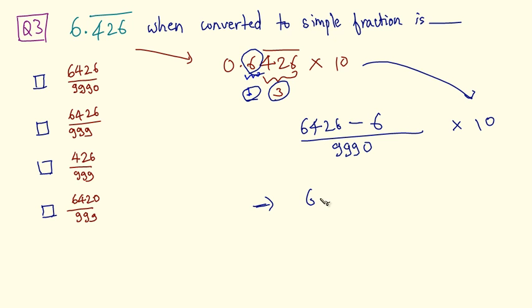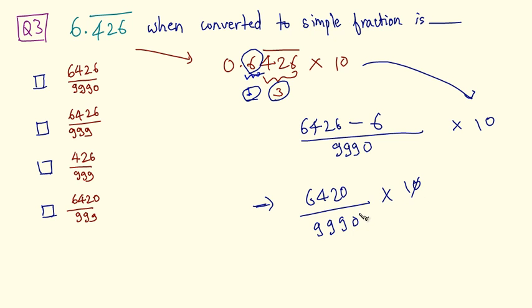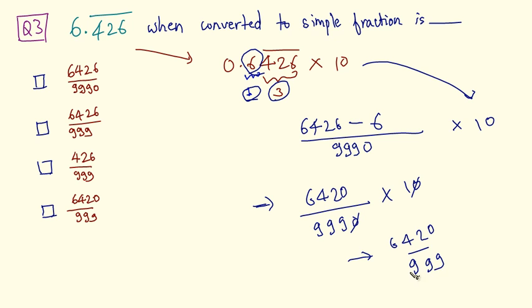This comes out as 6420 divided by 9990. The trailing zero gets cancelled out, so the answer is 6420 divided by 999.